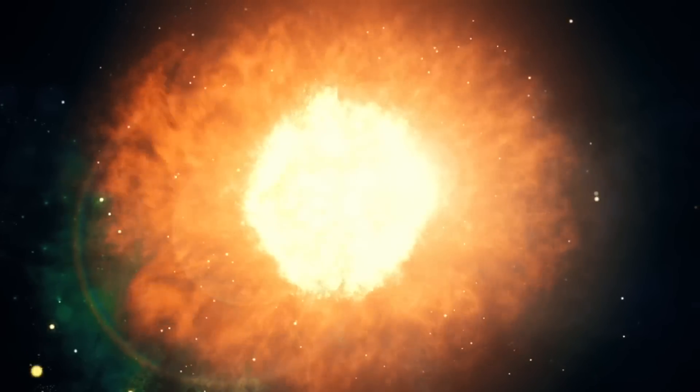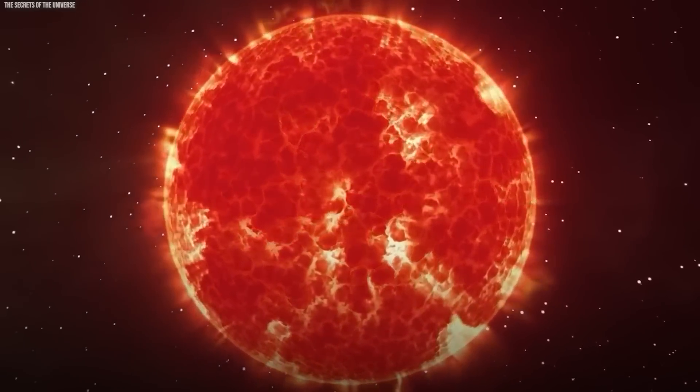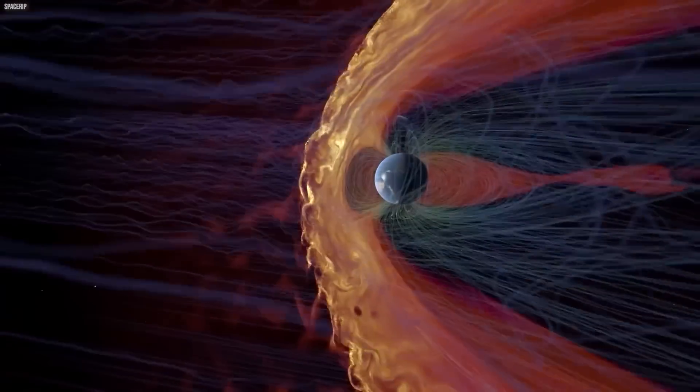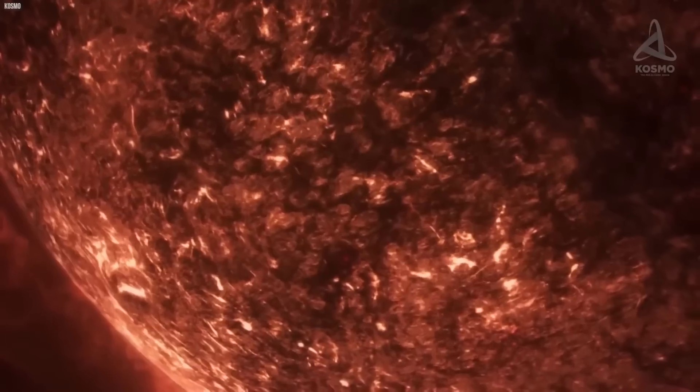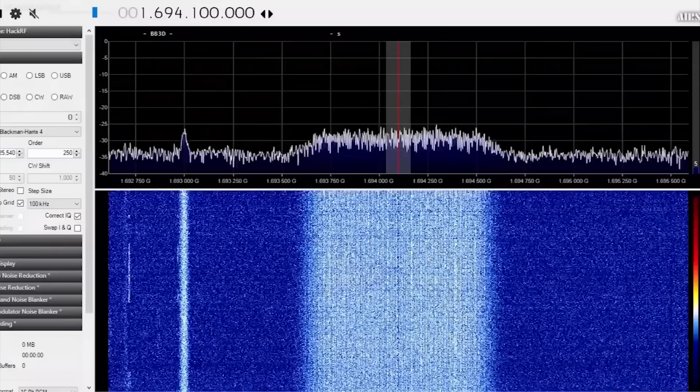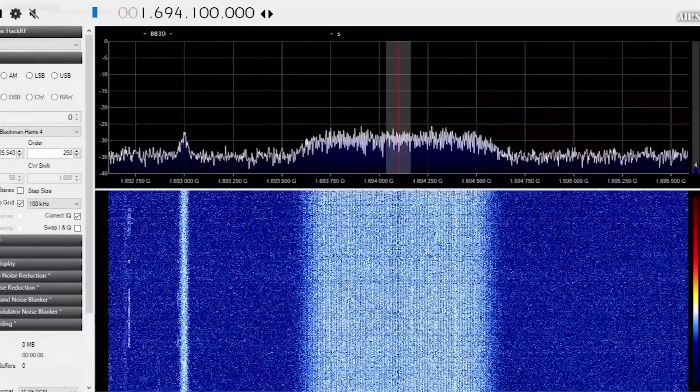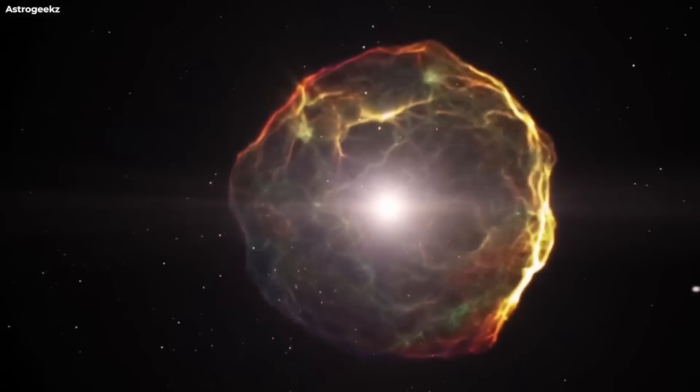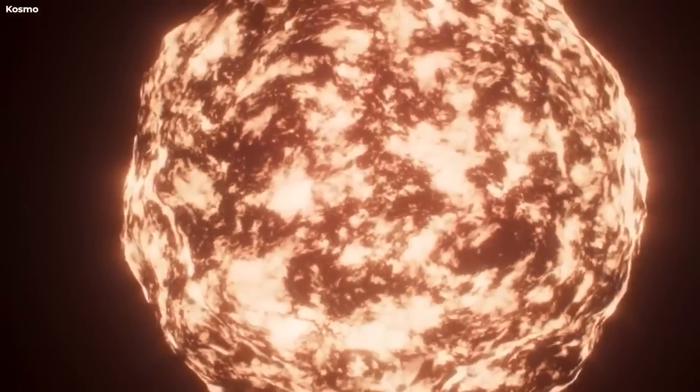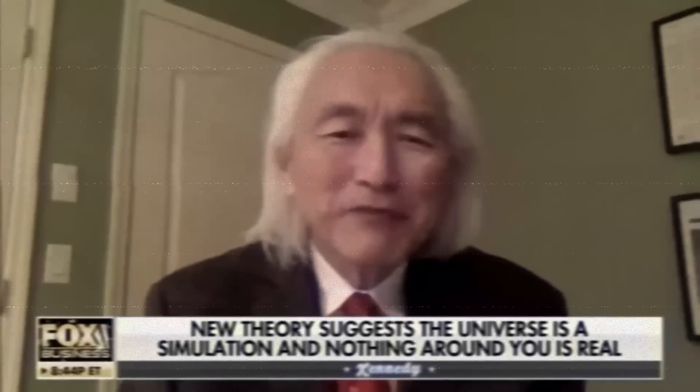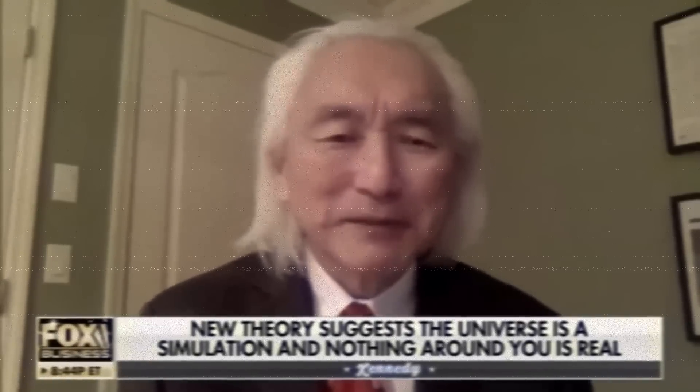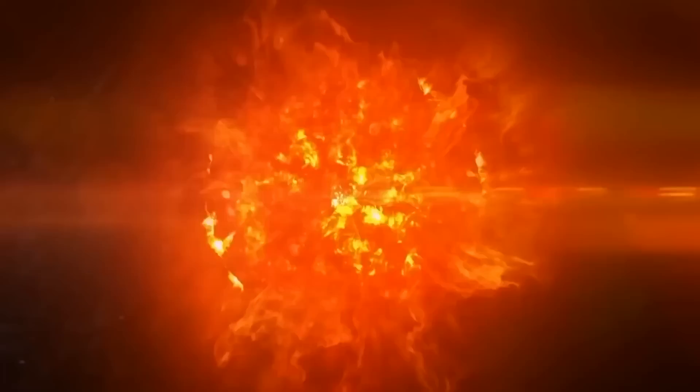Betelgeuse, a star that has captivated scientists for many years, is known for its massive size and has been the focus of extensive scientific research. Situated in our galaxy, it surpasses our own Sun in magnitude, raising questions about its formation and eventual demise. Recently, the strange behavior exhibited by Betelgeuse has caused even greater concern among scientists. The star has been displaying irregular patterns of dimming and brightening, leading some experts to speculate on its impending destruction. Famous physicist Michio Kaku has predicted that Betelgeuse will soon undergo a supernova event, involving the star's explosive demise, resulting in the release of an immense amount of energy.